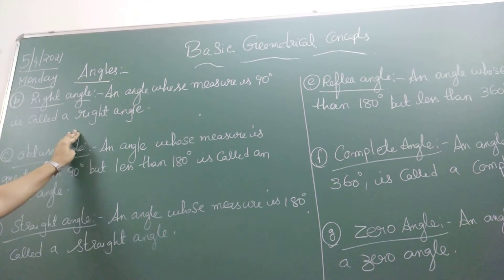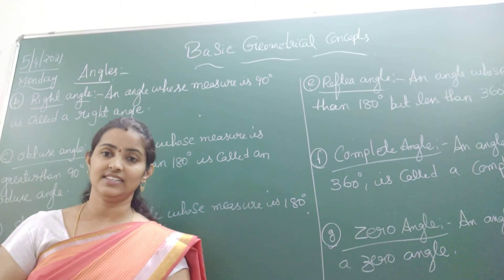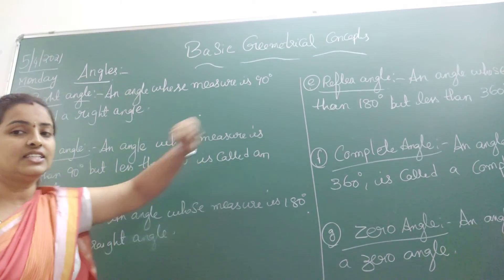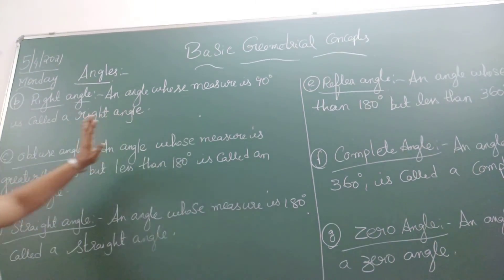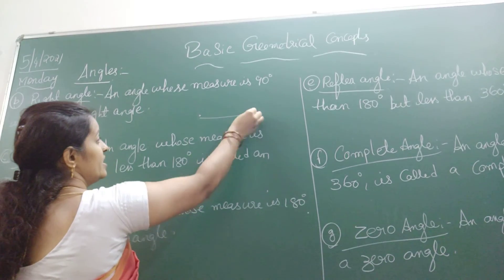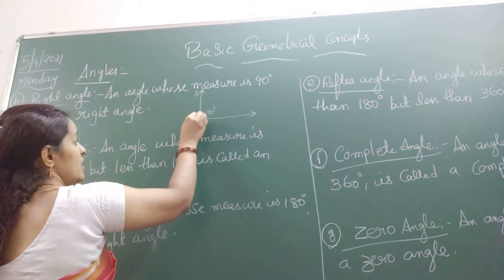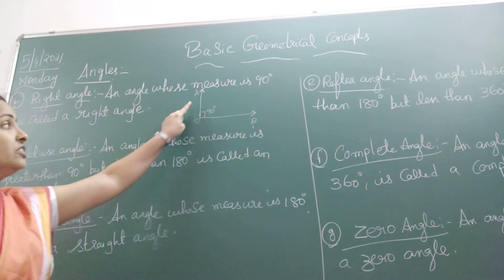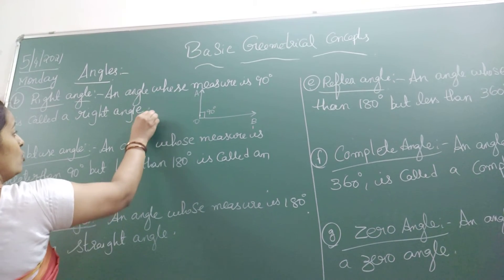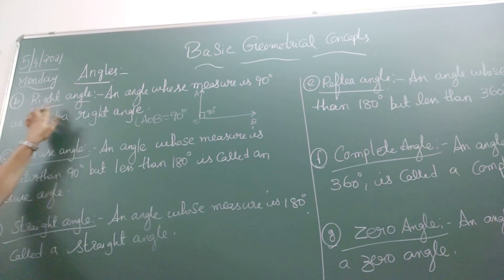Here we are going to learn about the next angle, that is a right angle. What do you mean by a right angle? A right angle is an angle whose measure is exactly 90 degrees. If I am taking two rays — one ray and another — which have an angle of 90 degrees, let us label the rays as A, O, B. These two rays meet at one common point, which is called the vertex. The angle AOB measures 90 degrees, and that angle is said to be a right angle.